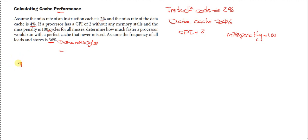For the instruction miss cycles, this would be equal to I (instructions per program) times the miss rate, which is 0.02 or 2%, times the miss penalty of 100. That would be equal to 2I.